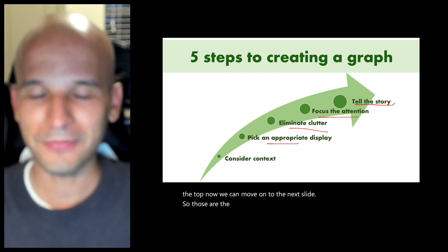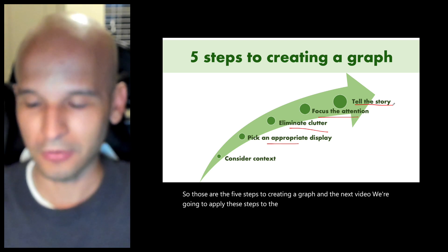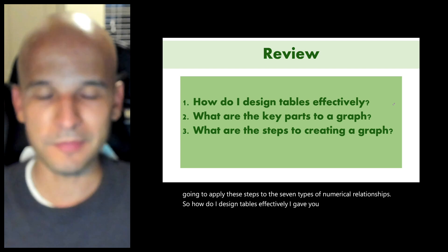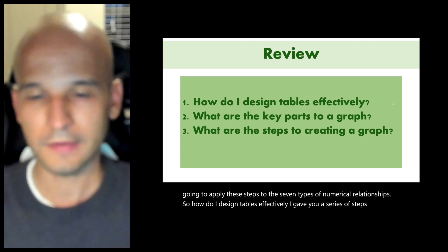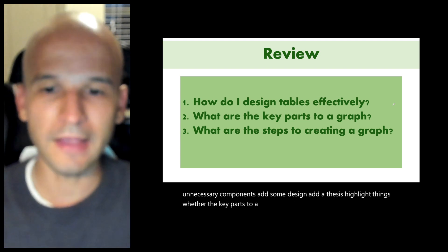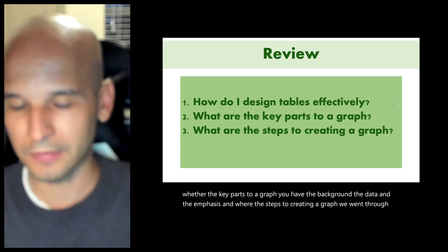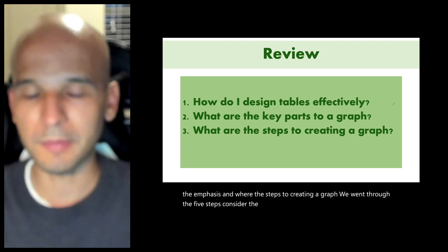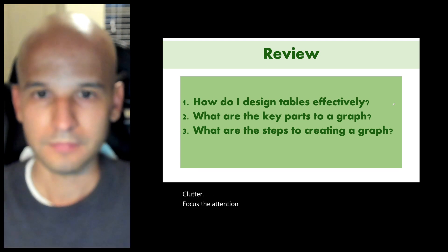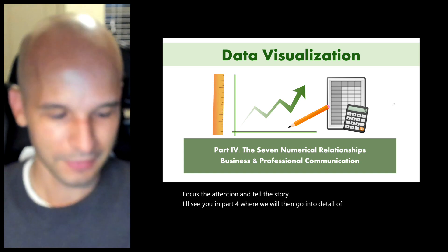Those are the five steps to creating a graph. In the next video, we'll apply these steps to the seven types of numerical relationships. To recap: how do I design tables effectively? Eliminate unnecessary components, add some design, add a thesis, highlight things. Key parts to a graph: background, data, and emphasis. Steps to creating a graph: consider the context, pick an appropriate display, eliminate clutter, focus the attention, and tell the story. See you in part four, where we go into detail on each type of graph.